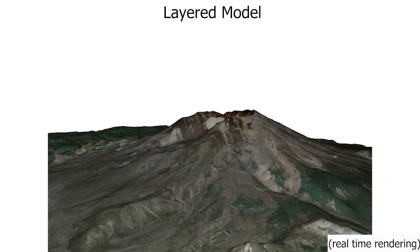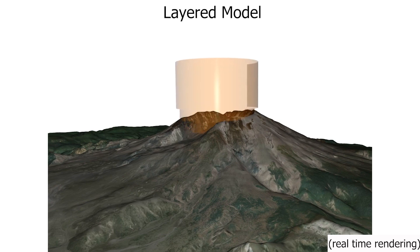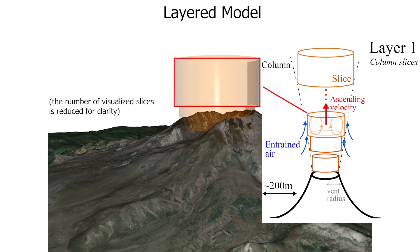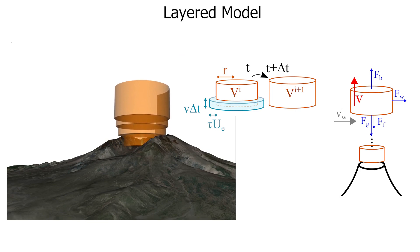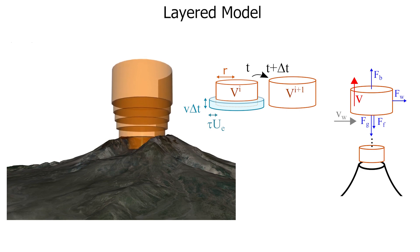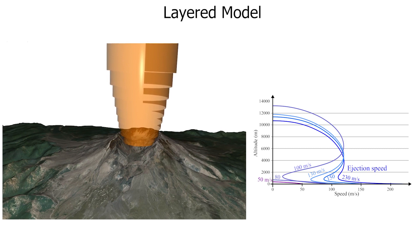Our animated model is based on two layers. The first simulates the macroscopic dynamics of the eruptive column using overlapping and evolving cylindrical slices. This slice-based simulation takes into account the weight and buoyancy of the gas mixture that constantly entrains surrounding air. The variation of size, density, and temperature of the slices is dynamically simulated to animate a consistent evolution of the column, and we compare the evolution of the ascending velocity to standard measurements from volcanology literature.